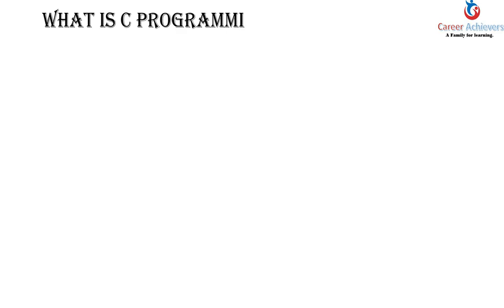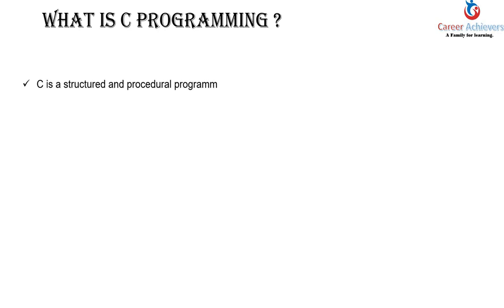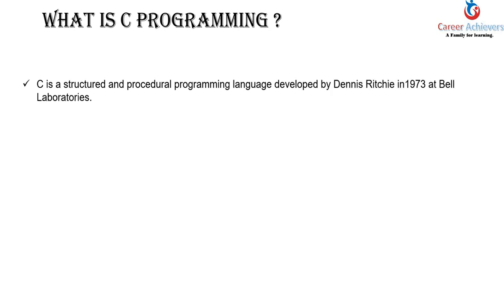What is C programming? C is a Structured and Procedural programming language developed by Dennis Ritchie in 1973 at Bell Laboratories. C is a Structured and Procedural programming language hai, jo American Computer Scientist Dennis Ritchie ke dwara 1973 mein developed ki gayi thi.